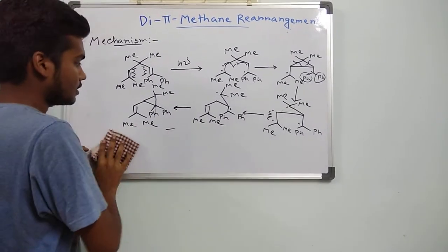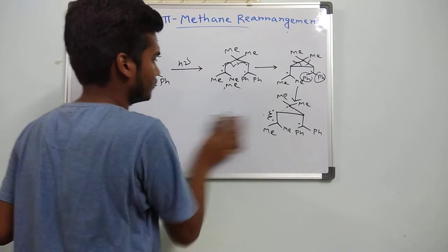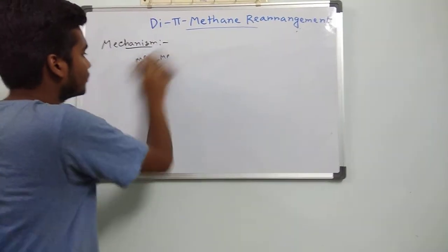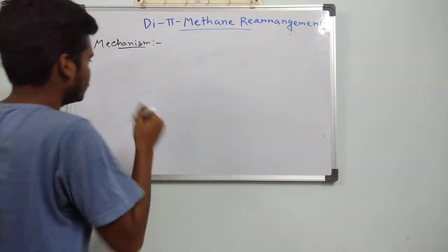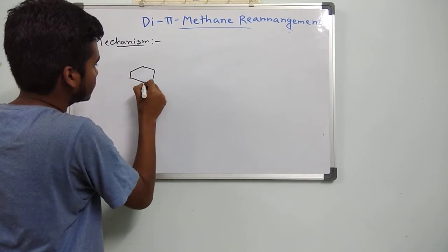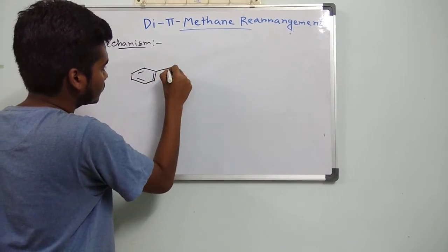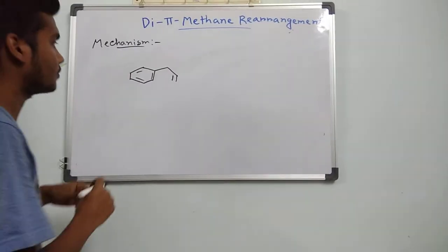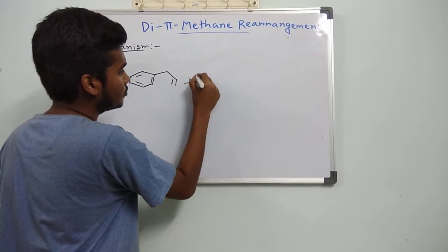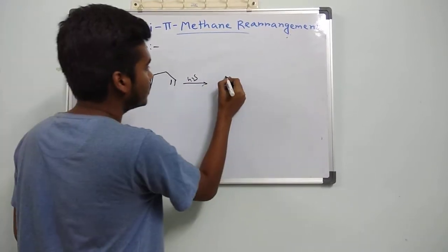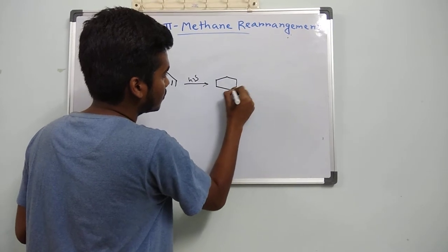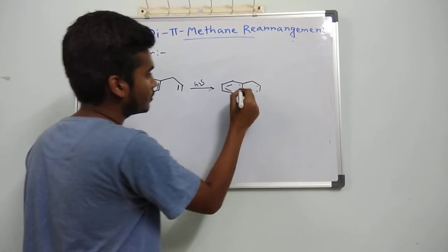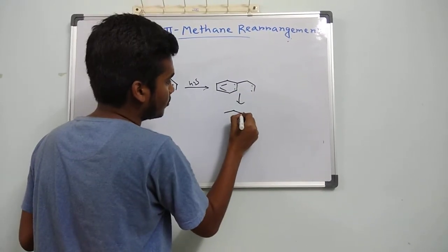Now I will take another example. First, in presence of hν, we have already seen that these two double bonds will cleave homolytically. So first, these two will recombine to each other.